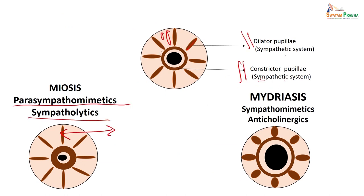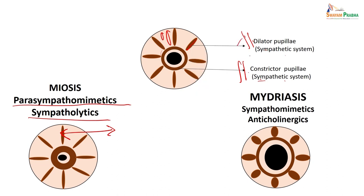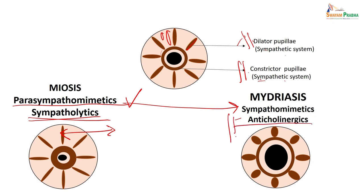This is a diagrammatic representation of the pupil. There are dilator pupil muscles and constrictor pupil muscles. The dilator pupil muscle is supplied by sympathetic and the constrictor pupil is supplied by parasympathetic system. Parasympathomimetic drugs cause miosis, whereas sympatholytics also cause miosis. On the other hand, sympathomimetics and anticholinergics cause mydriasis. So drugs which cause mydriasis — anticholinergics — will precipitate glaucoma, and parasympathomimetics will cause miosis and will be useful.